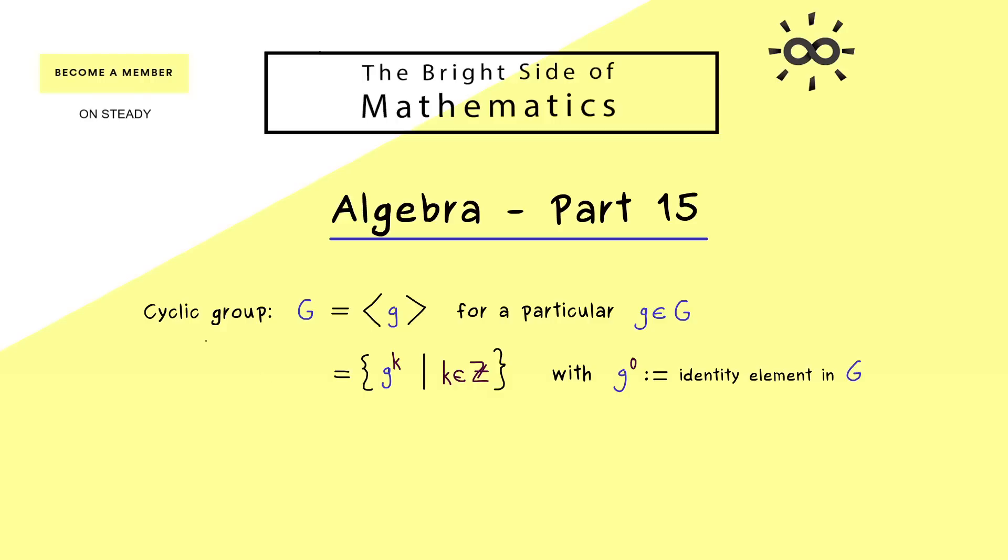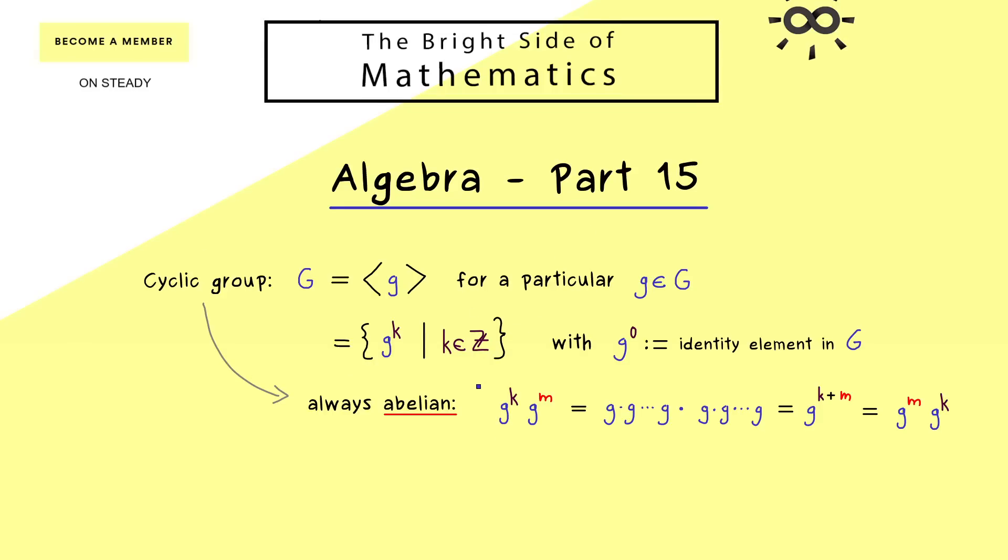And indeed, this immediately implies that a cyclic group has to be an abelian group as well. We immediately see that when we put two elements together. This means we have g to the power k and g to the power m, and we know this is just repeating the element g or the inverse of g. However, no matter which of the both cases we have, we know that we can simplify it. Namely, counting the elements gives us that this is g to the power k plus m. And then obviously we see that we get the same result when we change the order. So in short, since only one element spans the whole group, we immediately get the commutativity. Hence all the examples of today have to be abelian groups.